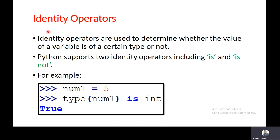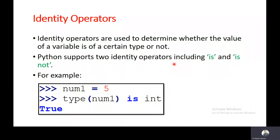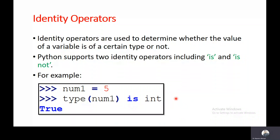Let's look at identity operators. Identity operators are used to determine whether the value of a variable is of a certain type or not. Python supports two identity operators: 'is' and 'is not'. For example, I have assigned 5 to a variable, passed it to the type function, and compared it with int using the identity operator 'is', and it is returning true because the type function returns int, which equals int.